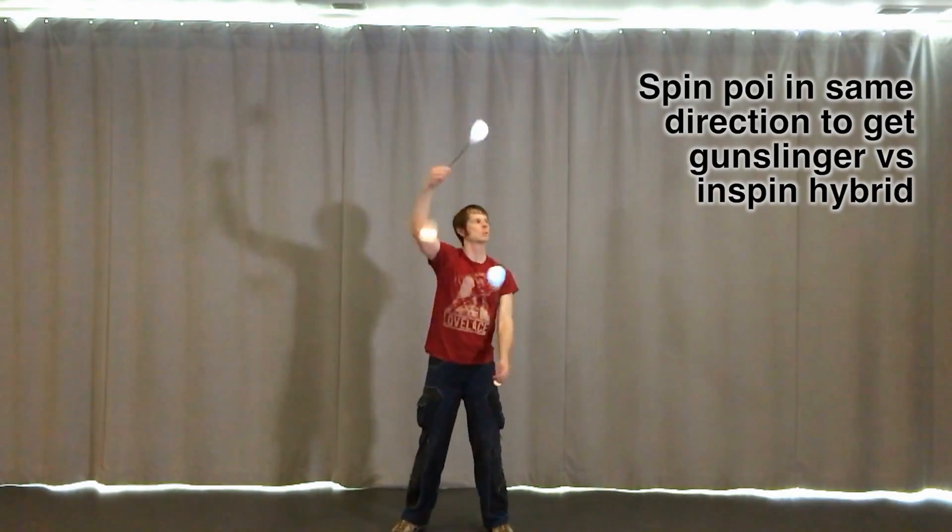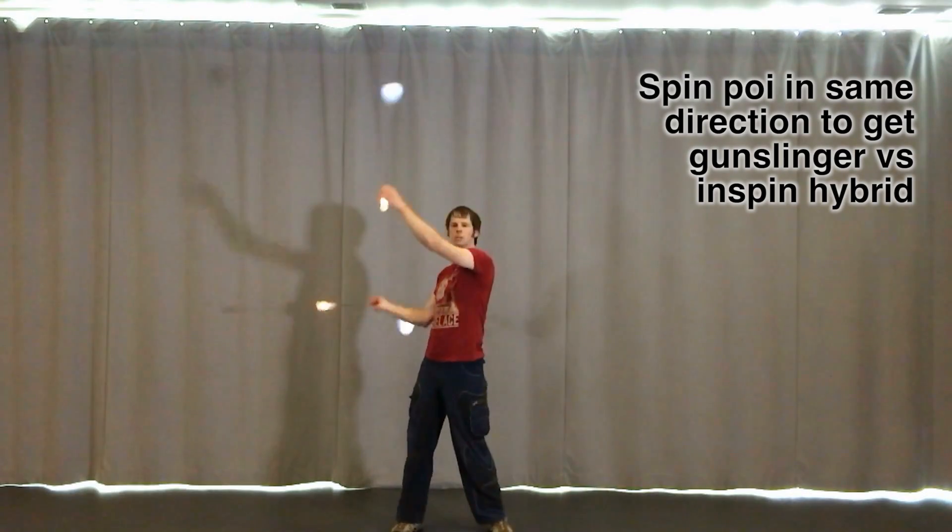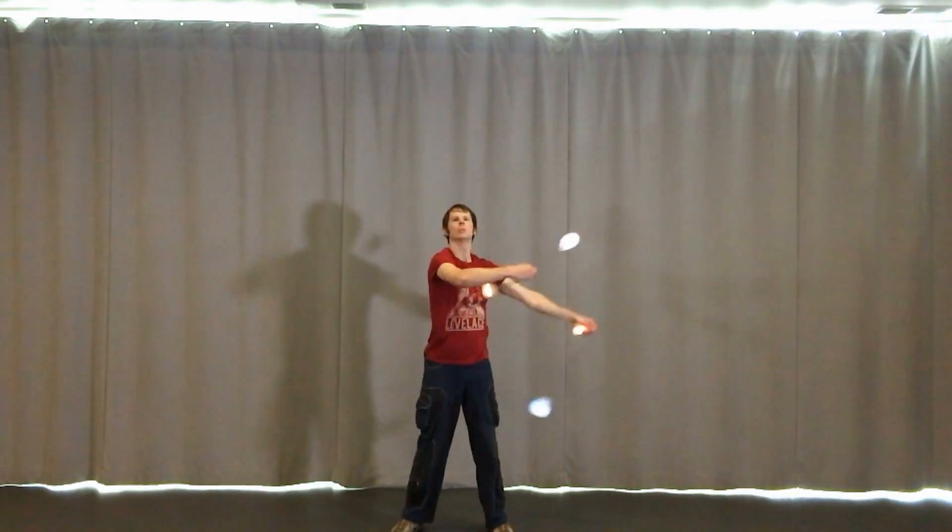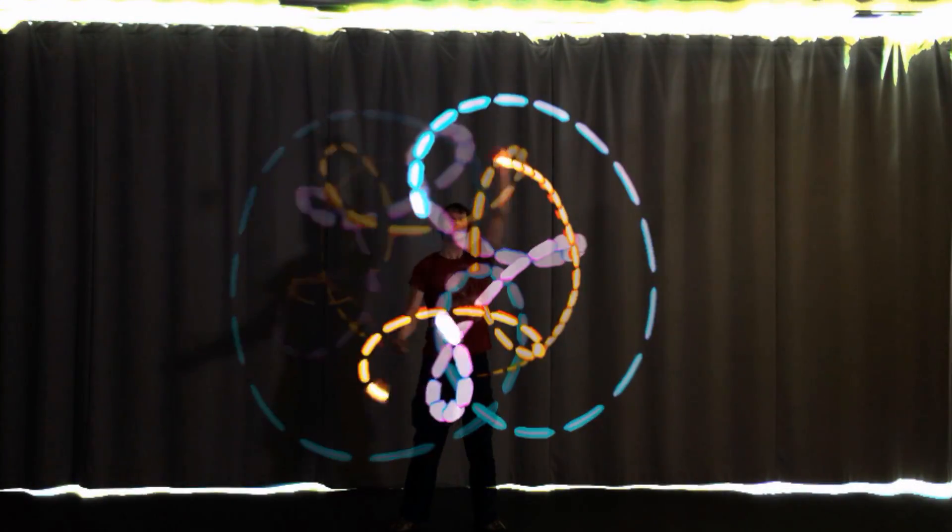To do this, start with the gunslinger poi and the other poi both turning in the same direction. Once again, the hands are going to move in split time opposites. This time, however, as the gunslinger poi drops down or pops up, the other poi will do the exact same thing.